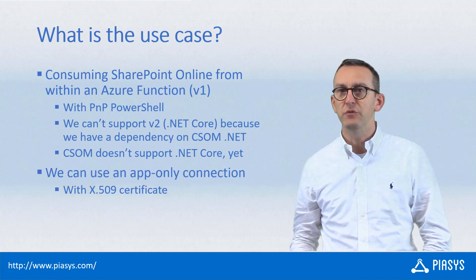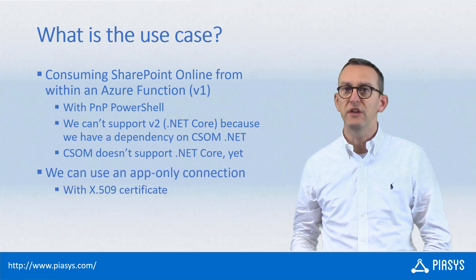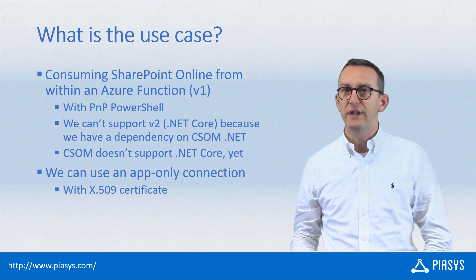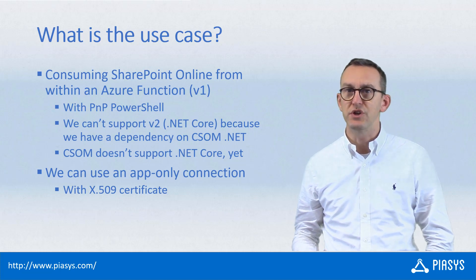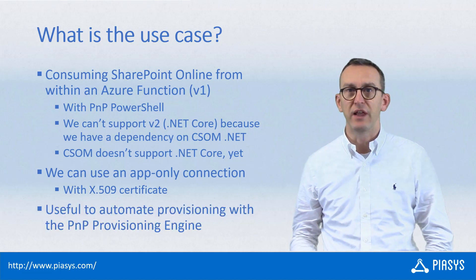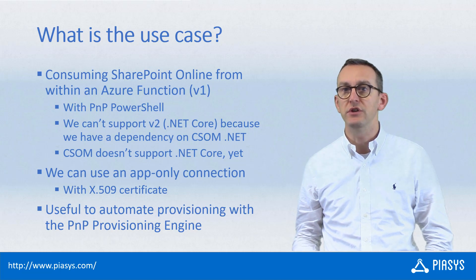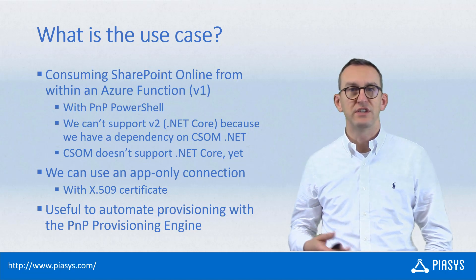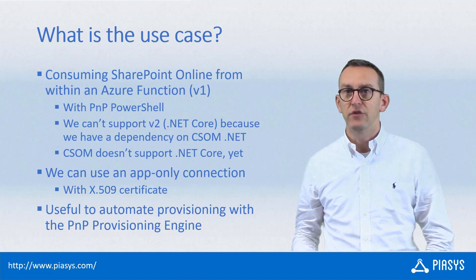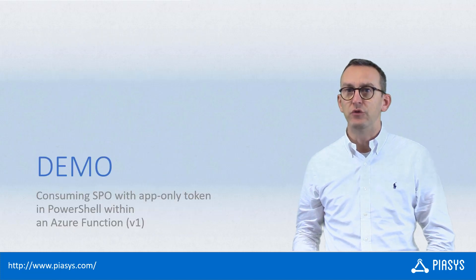Imagine that you have a solution in which you want to use an X.509 certificate to connect with an app-only access token to SharePoint Online and do some stuff like, for example, doing automated provisioning of content or just some maintenance tasks that you want to execute through an Azure Function. Let's see how to do that.